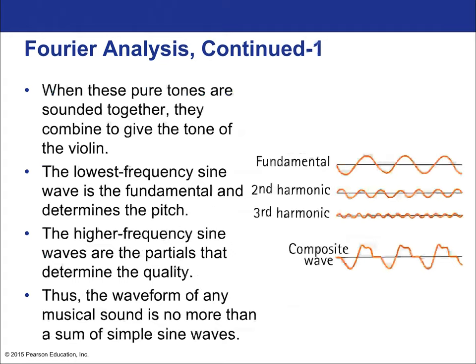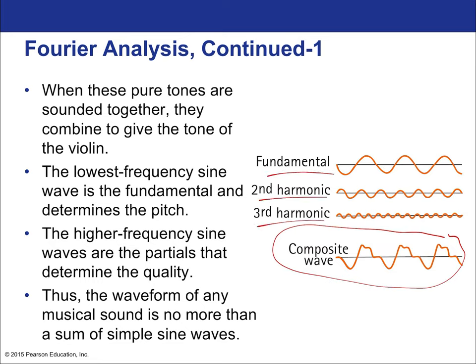When these pure tones are sounded together they combine to give the tone of the violin. The lowest frequency sine wave is the fundamental and determines the pitch; the higher frequency sine waves are the partials that determine the quality. This complex sound is the sum of the fundamental, second, and third harmonics. You can imagine adding one on top of the other — take the sine wave, add another to it, then add the shorter lower-amplitude higher-frequency one on top, and you get that complex shape. Fourier analysis does the opposite: it goes from the complex wave and calculates what were the waves that built it.